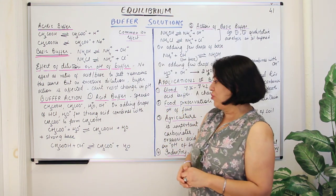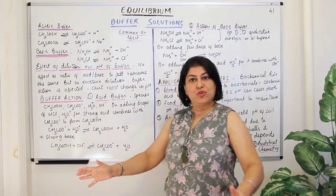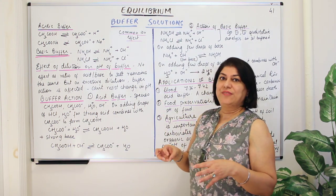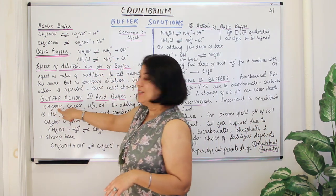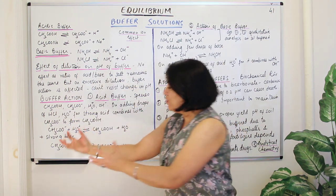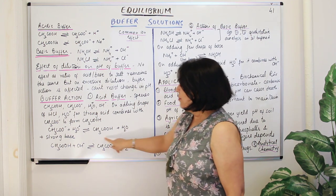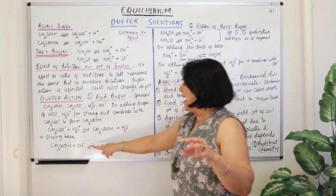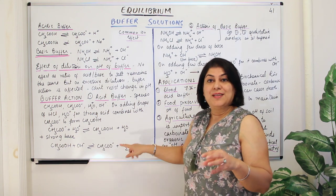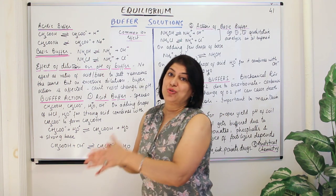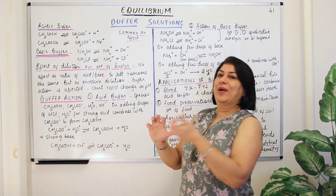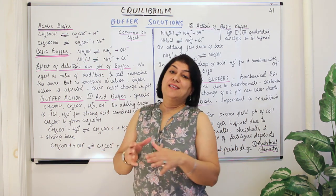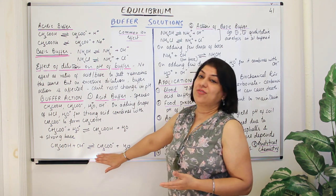If instead a few drops of a strong base are added, the base dissociates completely, producing excess OH⁻ ions. These OH⁻ ions react with CH3COOH, removing H⁺ from it and forming more CH3COO⁻, while using up the H⁺ to form water. The OH⁻ that entered the solution gets consumed. Since there is no increase in OH⁻ and therefore no change in H⁺ concentration, the pH does not change — this is the buffer action.